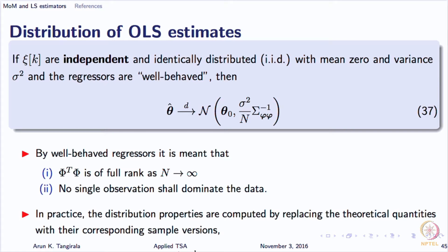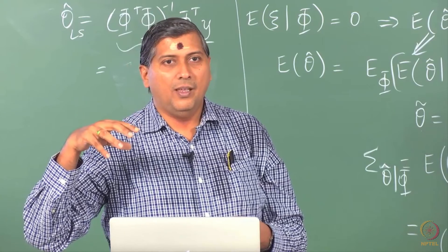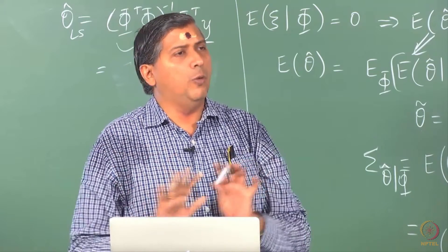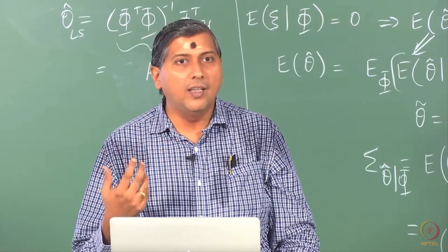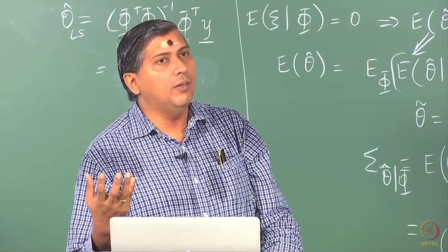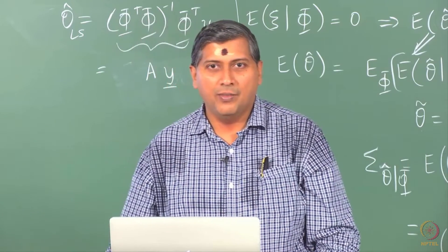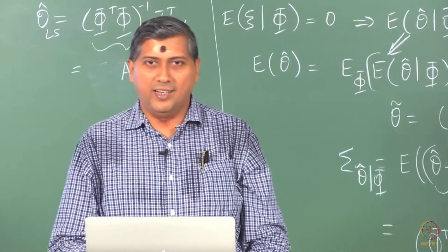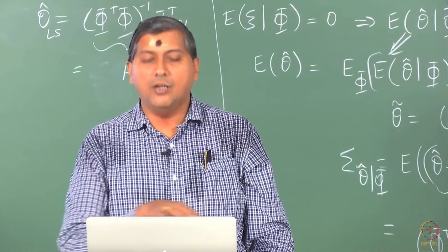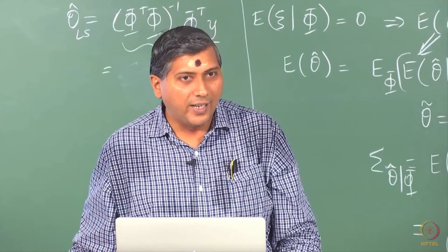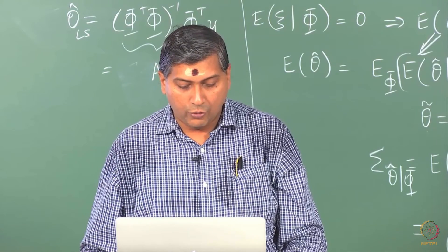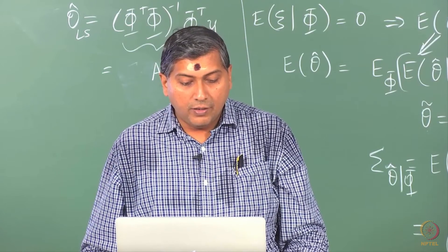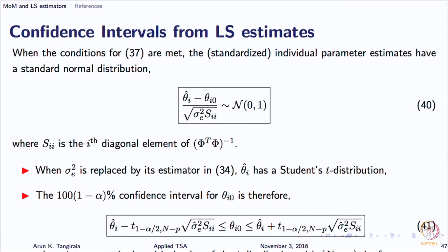A few observations, after all we know there is no robustness incorporated into the estimator. There is no robustness explicitly anywhere incorporated into the parameter estimation formulation. As a result, a few extreme data points can completely hijack the estimate and that is what we mean by well behaved regressors. Well behaved regressors would mean that no single observation will dominate the regressor matrix and that phi transpose phi is of full rank particularly as n goes to infinity. So from this we actually compute the confidence regions.